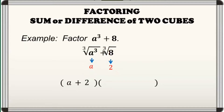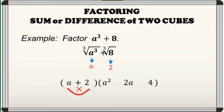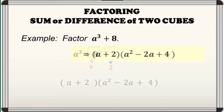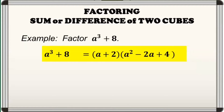We can easily form our trinomial factor by following these steps, using the terms in our binomial factor. First, square the first term. Next, square the second term. And lastly, multiply the first and second term. To complete the remaining signs, remember that the sign of the second term in our trinomial factor is opposite the operation used in our binomial factor. And also, the last term should always be positive. Hence, the factored form of a cubed plus 8 is the quantity a plus 2 times the quantity a squared minus 2a plus 4.